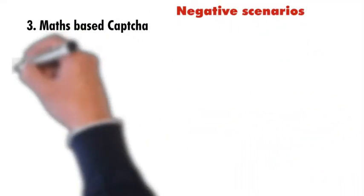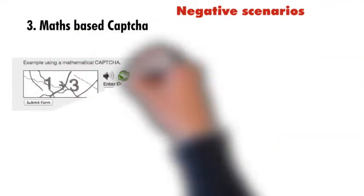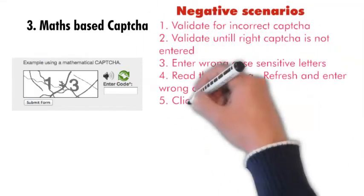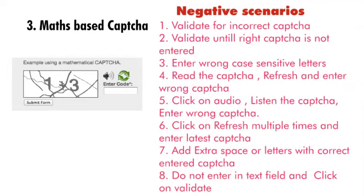Negative scenarios of math-based CAPTCHA: validate for an incorrect value — if 1+3 is given, write 5. Validate until the right CAPTCHA is not entered — write 4, 3, 5, 8 and then write the correct answer. Enter wrong case-sensitive letters — if 1+3 is given, write capital A and check whether it accepts only numbers. Refresh and enter wrong CAPTCHA. Click on audio, listen, and enter wrong CAPTCHA. Click on refresh multiple times and enter latest CAPTCHA. Add extra space or letters with the correct answer.